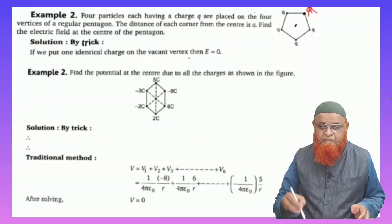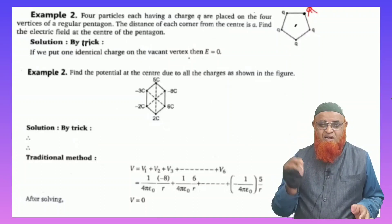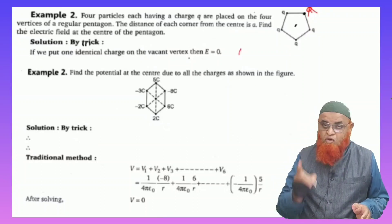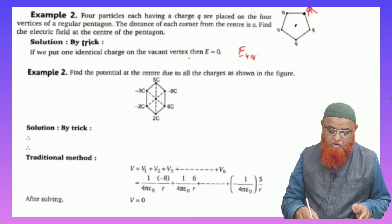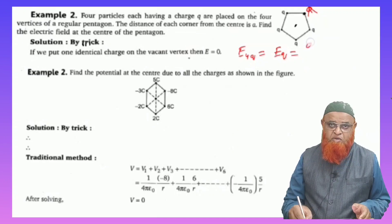Instead of finding the electric field intensity because of the four charges, if you find the electric field intensity because of the one charge, that is going to be the answer. So E because of four q will be equal to E because of one q, and that is going to be equal to how much? You know, it is going to be equal to q by 4πε₀ into r.